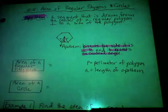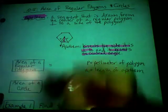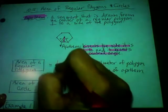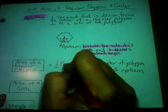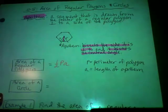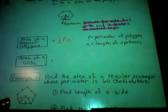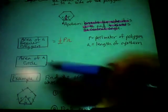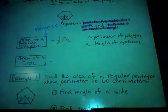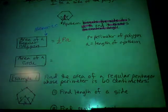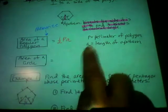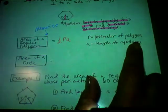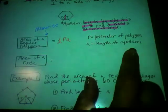The area of a regular polygon is one-half PA. This is not on your AIMS reference sheet, so you need to memorize it — that's the third formula you've had to memorize. P represents the perimeter of the polygon, and little a represents the length of the apothem.